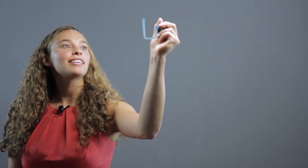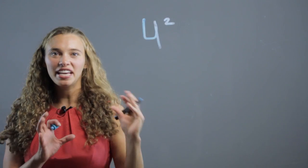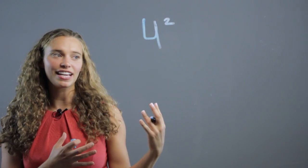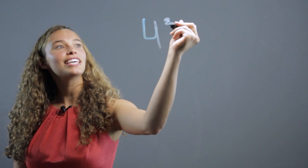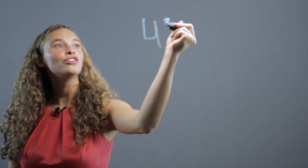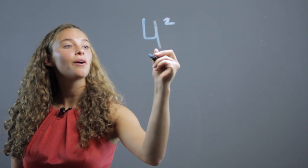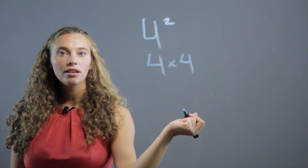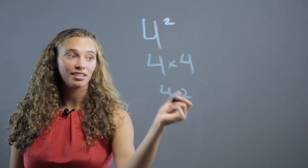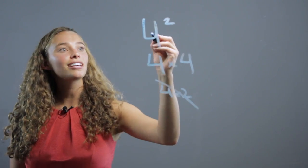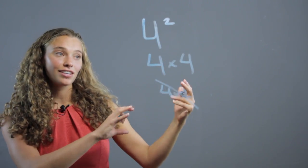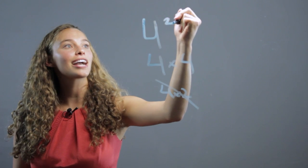When kids see something like four squared, they'll tend to freak out a little because it looks kind of advanced. We think of exponents as advanced. But all you have to tell them is this two means four two times — so that's four times four. Make sure they don't confuse it with four times two. That's wrong. Exponent means that number times itself, however many times that exponent shows.